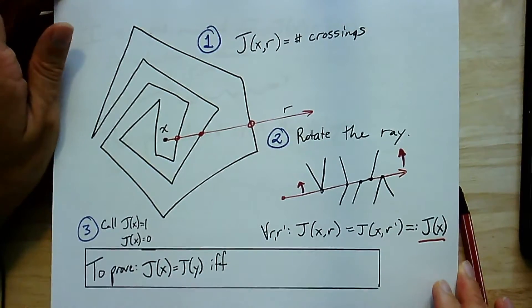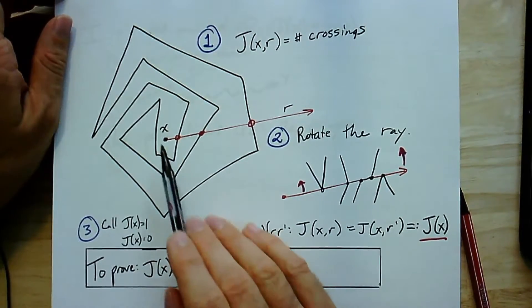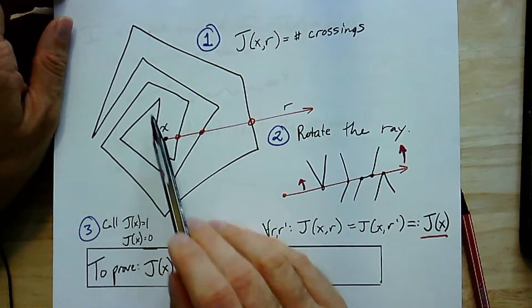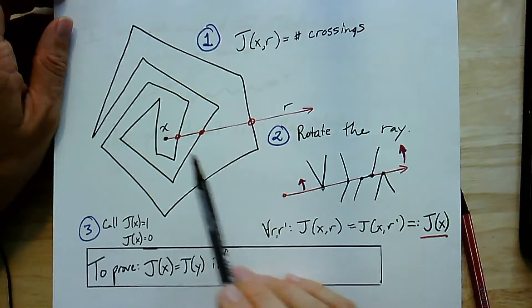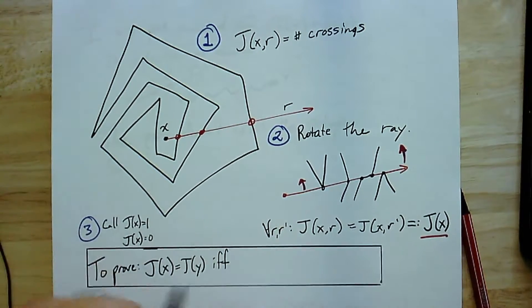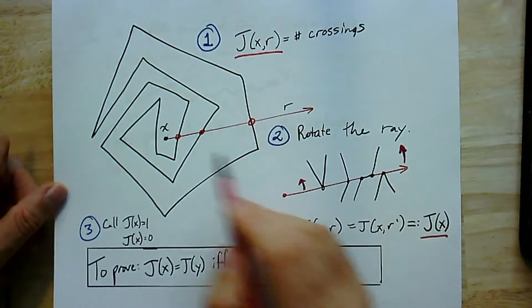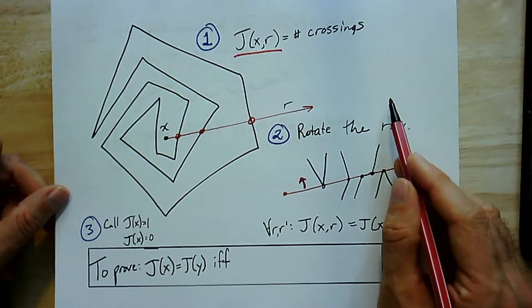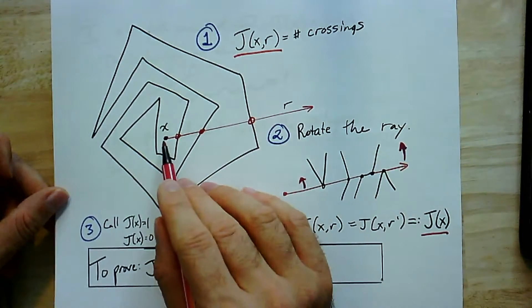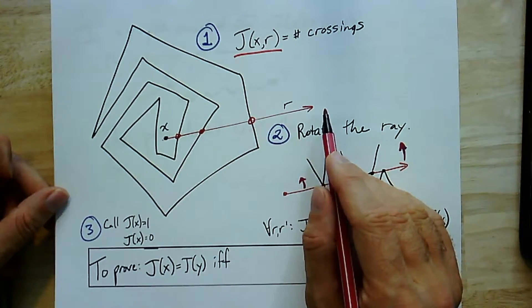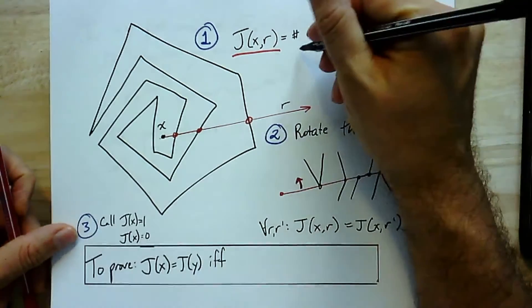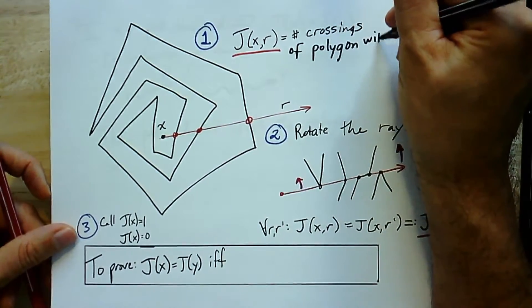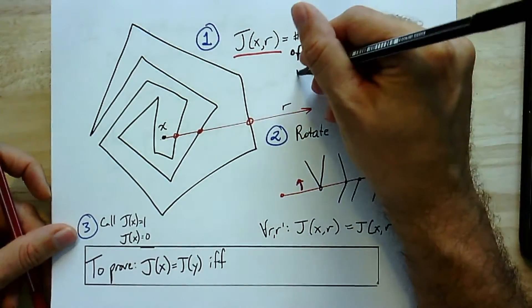So now, to start, we're going to look at points in the plane minus the polygon. So I can't walk on the black line here, which is the boundary of the polygon, but I have this point x, and I'm going to define this function j(x,r), where r is some ray, so it's like a half line that goes off in this direction.